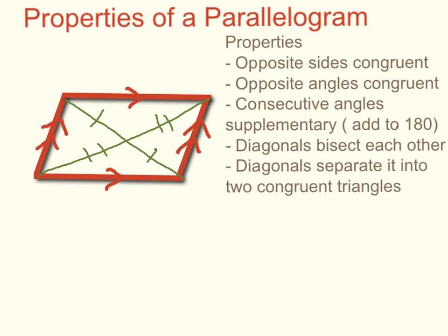The last property I want to mention now is that the diagonals actually separate it into two congruent triangles. So there's one, and the other would be here, for example. And based on all the other properties, those two triangles are going to have to be congruent to one another.